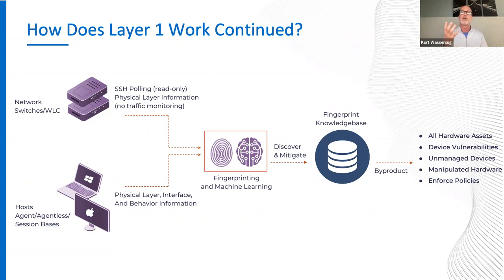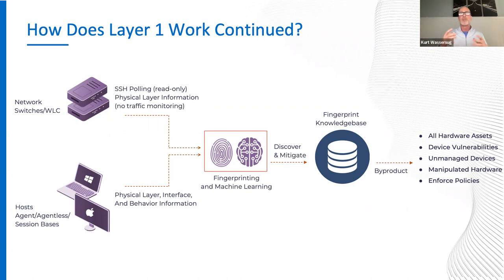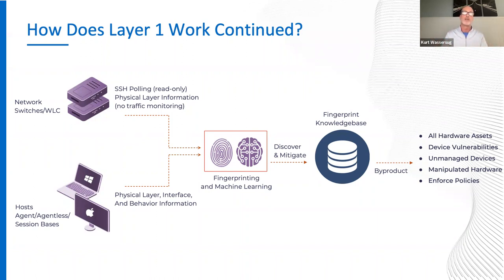We use show commands to extract analog signals from the switch. On the endpoint side, there are multiple options: you can put an agent on it; for those who are agent-adverse, you can do agentless; or session-based — when logging into Zscaler or Citrix, add a script to look for physical layer one information. We grab the physical layer one analog signals to determine the presence of a device. You can't hide from layer one — any time you plug something in, you've created an analog signal on the network.